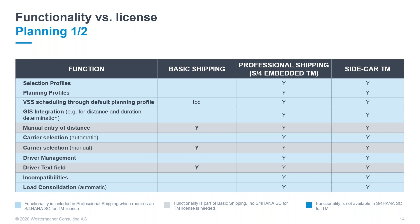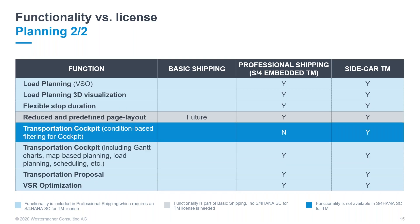For the planning section within TM, we see that professional shipping and the sidecar TM are essentially 100% the same — parity is around 99%. The only difference between professional shipping and basic shipping is that basic shipping is aimed at really manual creation of shipments, manual carrier selection, and assignment of demands within your transportation cockpit. Everything beyond that — for example, 3D visualization, load planning, transportation cockpit including Gantt charts and maps, and VSR optimization — is not included in basic shipping. If you want to go with advanced planning functionalities like load planning or Gantt charts, the license option is to use professional shipping or the sidecar TM solution.